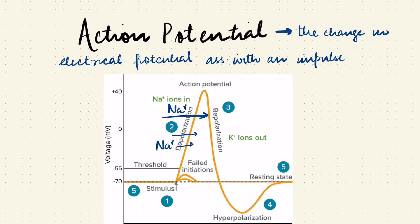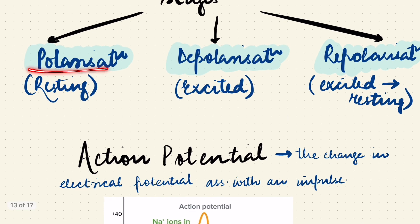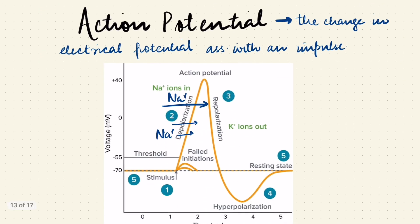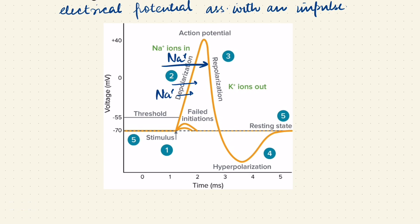Before we talk about these stages in detail, let's define action potential. Action potential is a fancy term defined as the change in electrical potential associated with an impulse. Polarization, depolarization, and repolarization are just changes in the electrical potential in a nerve — in layman's terms we can call them currents. This change in electrical potential is known as action potential.